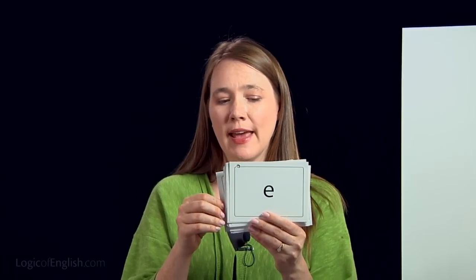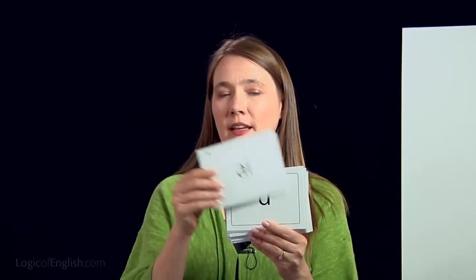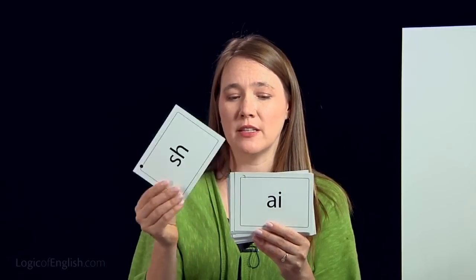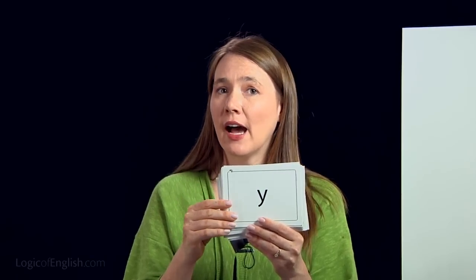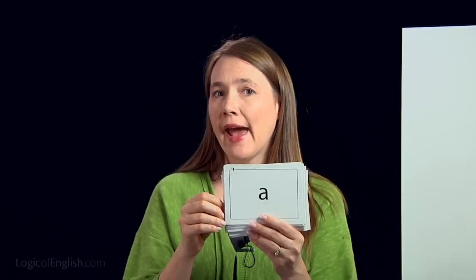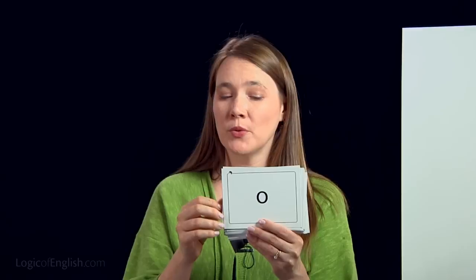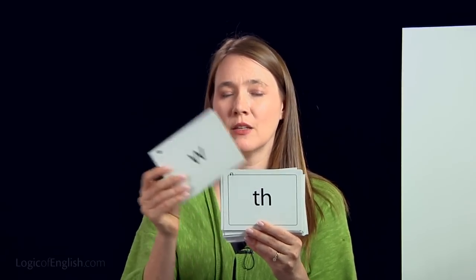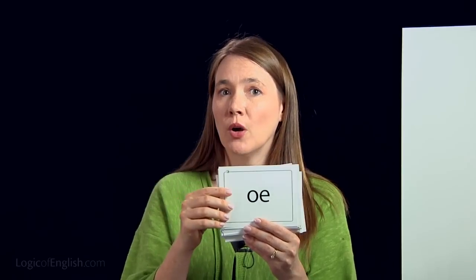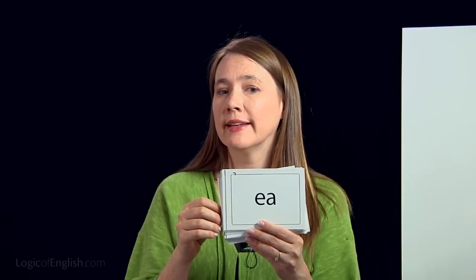Two-letter 'a' that we may not use at the end of English words; 'e,' 'ea,' two-letter 'a' that we may use at the end of English words; two-letter 'a' that we may not use at the end of English words; 'oo' that we may use at the end of English words; two-letter 'k' used only after a single short vowel.